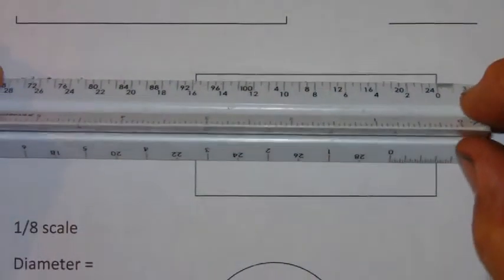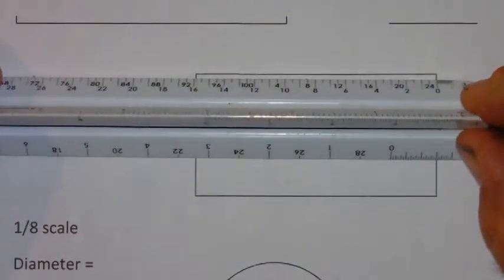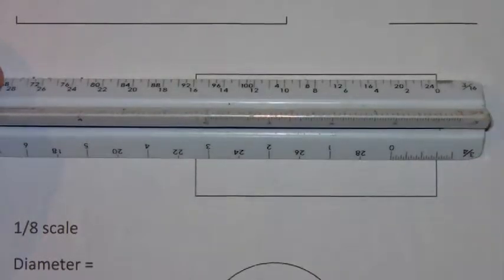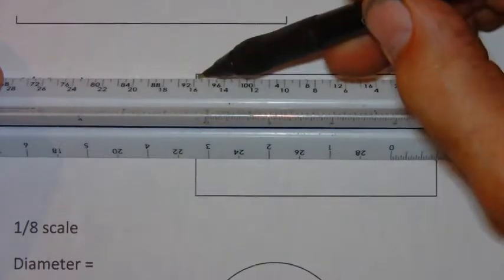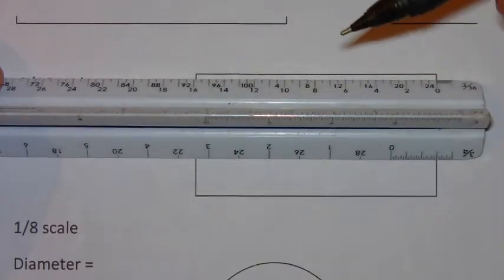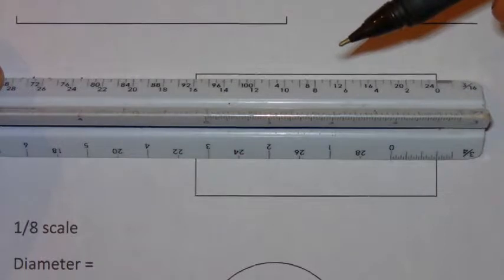Let's first measure the length. Place the zero in line with the side and we read across, and we can see that the line is going to be fifteen feet.